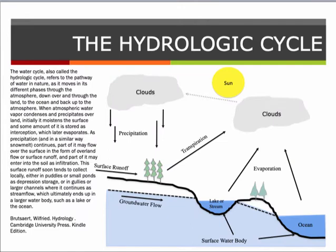The hydrologic cycle is depicted in the slide here. The water cycle, also called the hydrologic cycle, refers to the pathway of water in nature as it moves in its different phases through the atmosphere, down over and through the land to the ocean, and back up to the atmosphere.